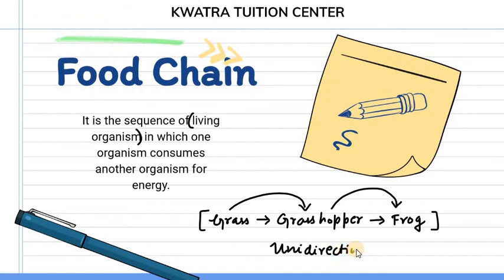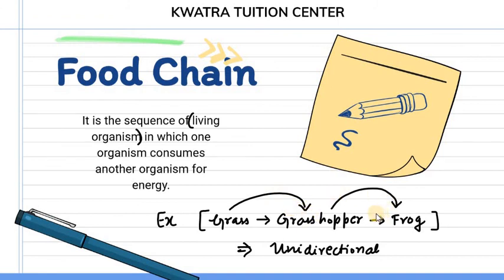For example, starting with grass, then grass is being consumed by grasshopper, then grasshopper is being consumed by frog. यहाँ पर energy transfer हो रही है — grass to grasshopper, then grasshopper to frog — क्योंकि frog grasshopper को consume कर रहा है। The process is unidirectional, meaning energy एक ही direction में flow हो रही है। ऐसा नहीं हो रहा कि frog से energy वापस grasshopper को जाए।